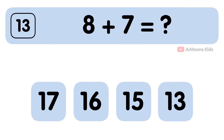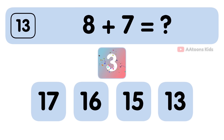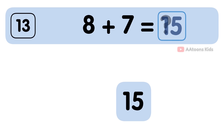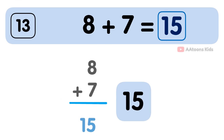8 plus 7 is equal to 15. The answer to 8 plus 7 is 15.